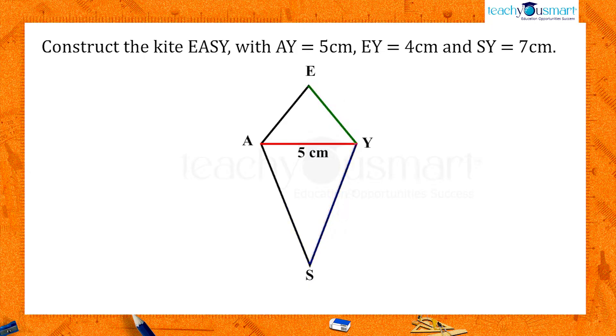By the definition of kite, EA equals EY equals 4 cm, and SY equals AS equals 7 cm.